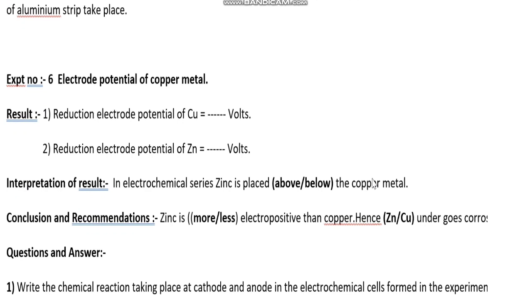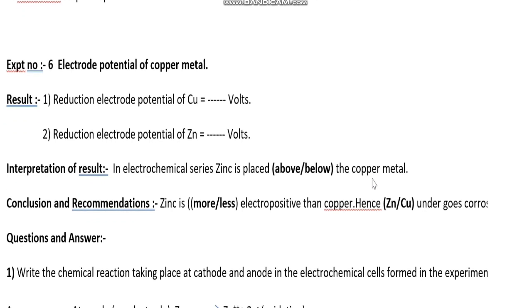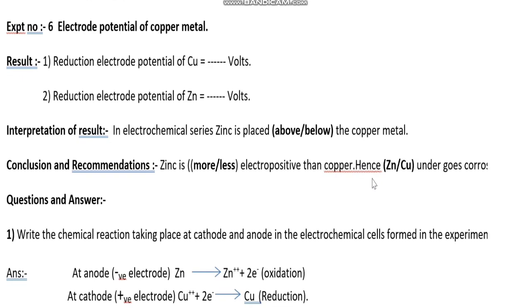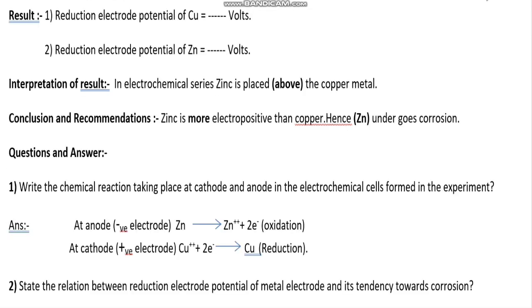Experiment number six: electrode potential of copper metal. Results: first, reduction electrode potential of copper; second, reduction electrode potential of zinc. Interpretation of result: in the electrochemical series, zinc is placed above copper metal. Conclusion and recommendation: zinc is more electropositive than copper, hence zinc undergoes corrosion.